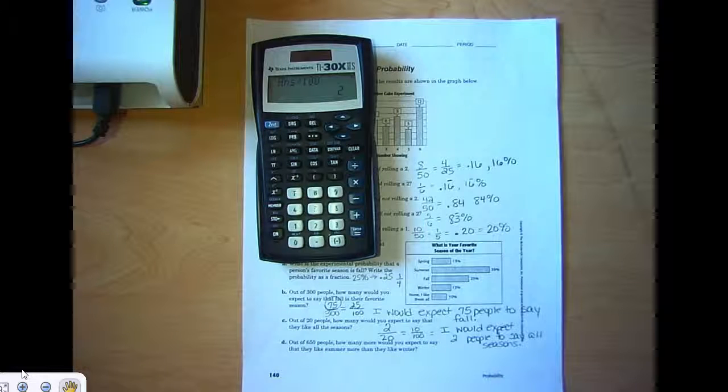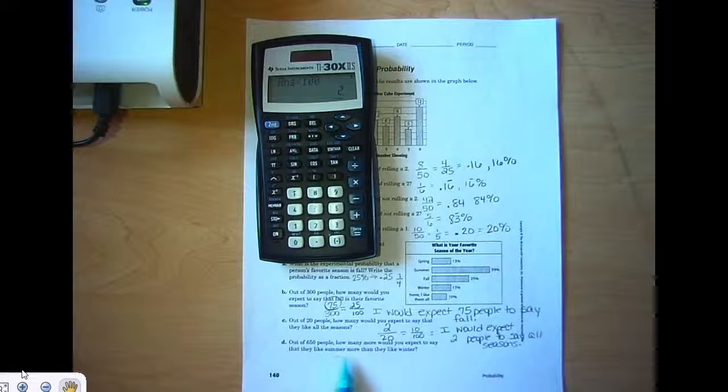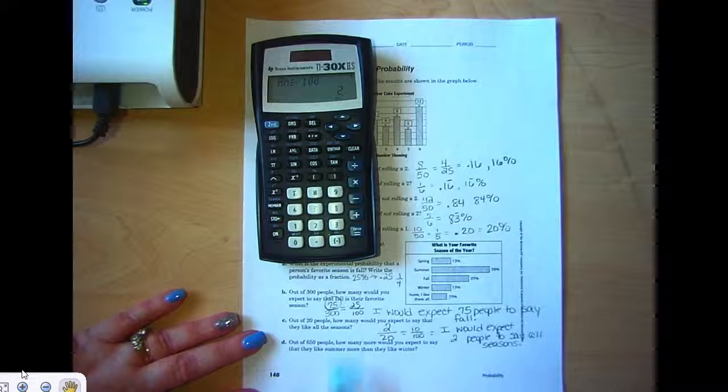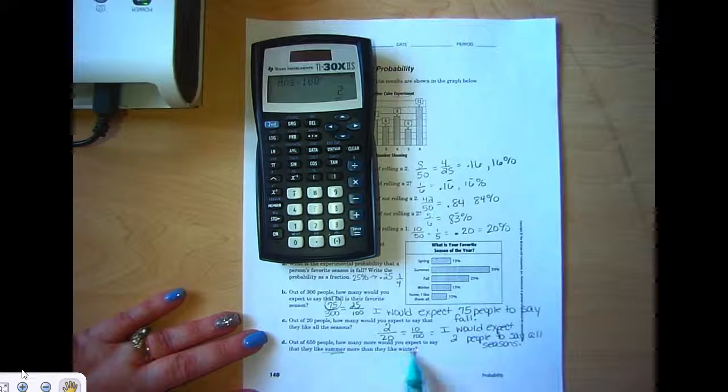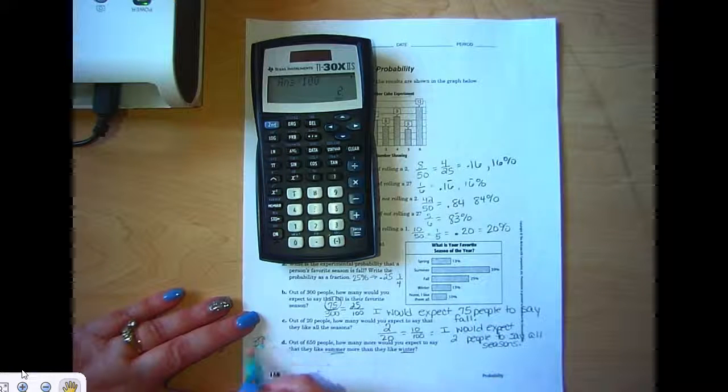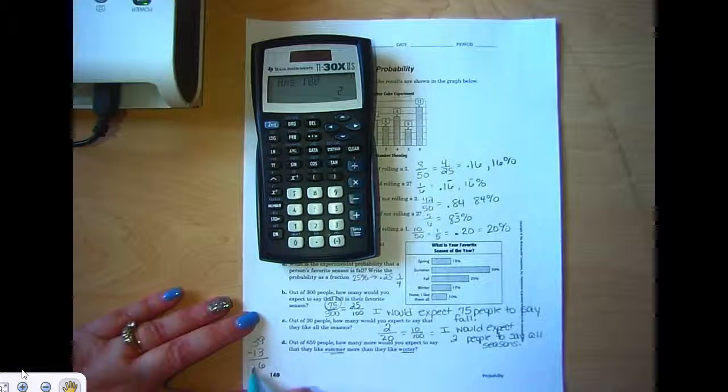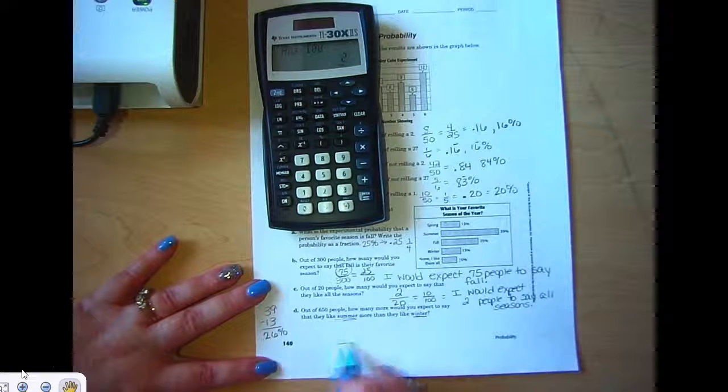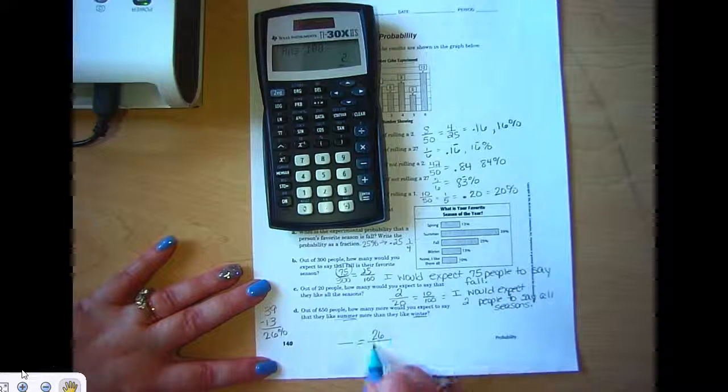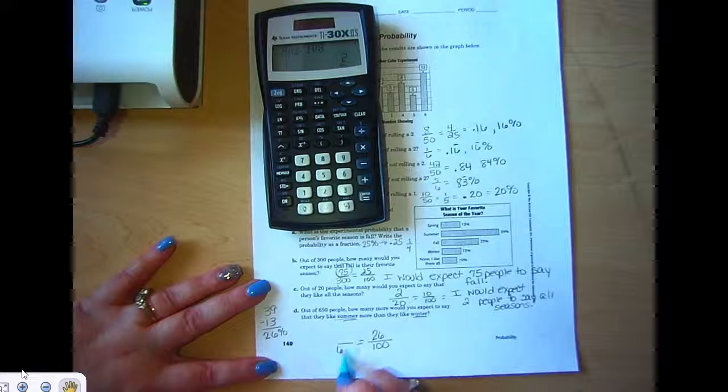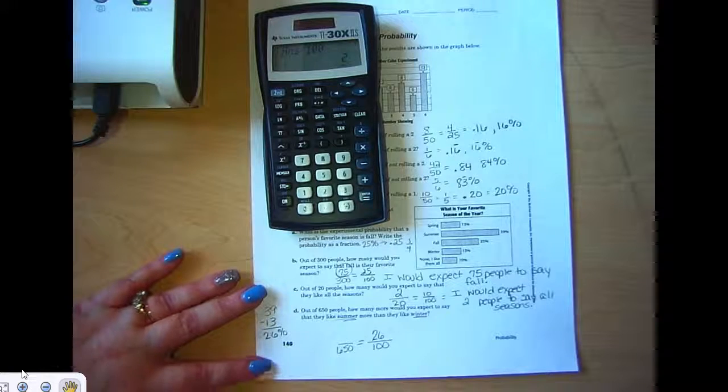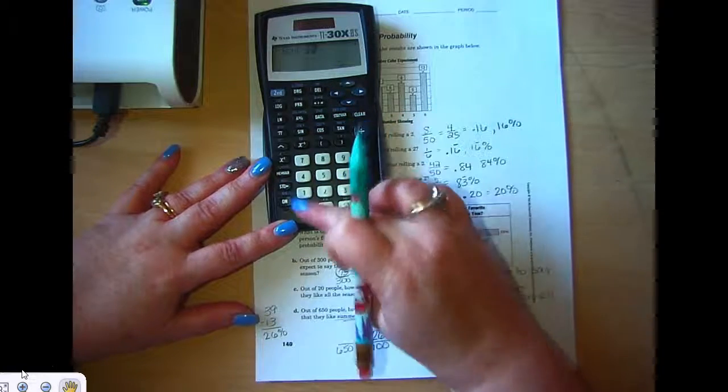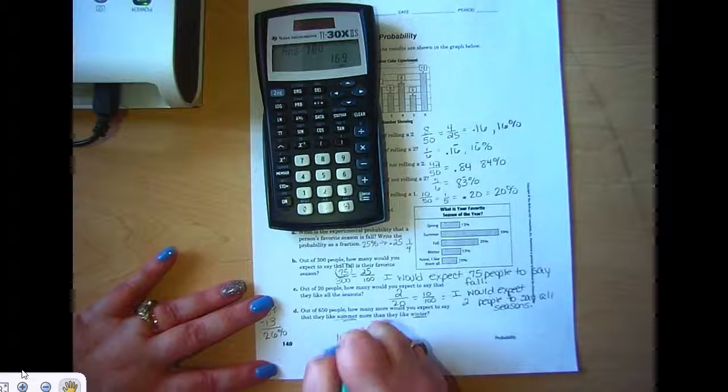And D, out of 650 people, how many would you expect to say that they like summer more than winter? We've got to find the percent difference first. Summer is 39 percent and winter is 13 percent, so the difference is 26 percent. That's the percent difference. So now if it's 26 percent difference out of 100, and we're talking about out of 650 people, we want to find the difference: 650 times 26 divided by 100. We would expect that difference to be 169 people.